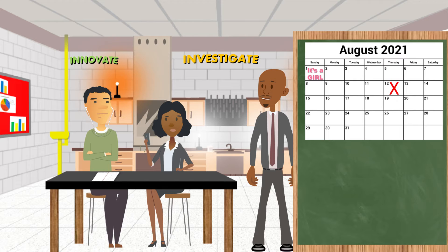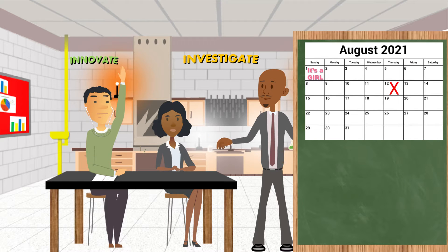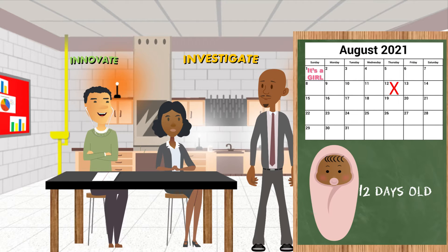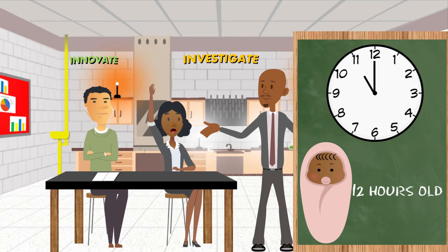Today is August 12th. If I told you my niece was born on August 1st of this year, how old is she today? 12 days old. Right. If she was born at 11 p.m. last night, how old is she? Oh, she'd be 12 hours old.